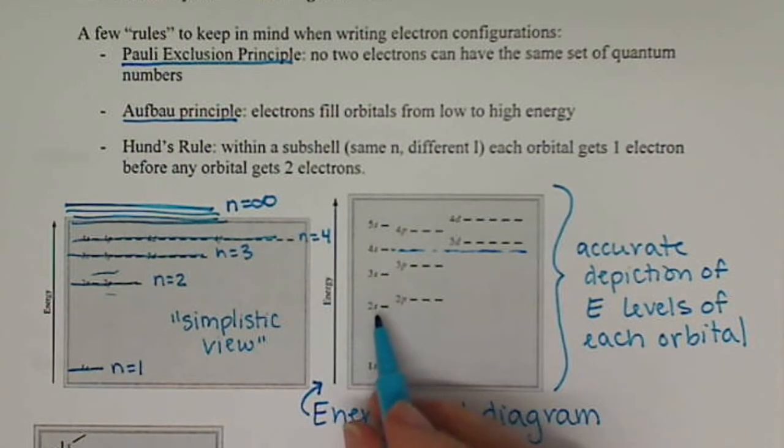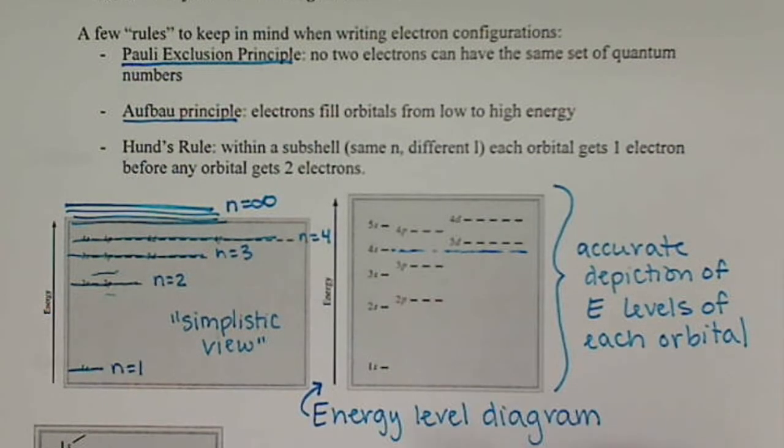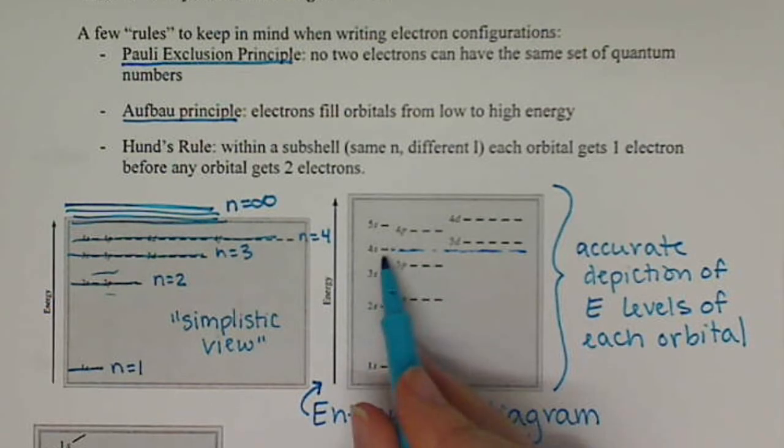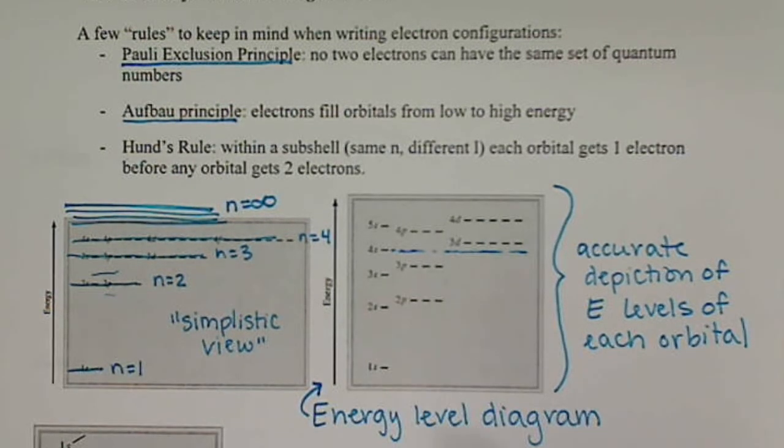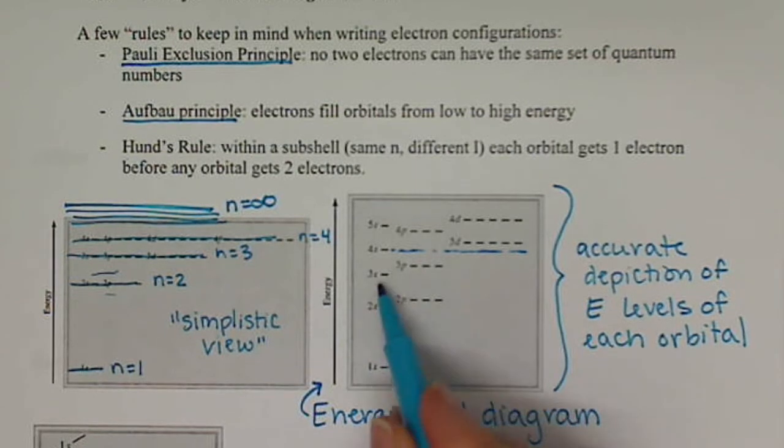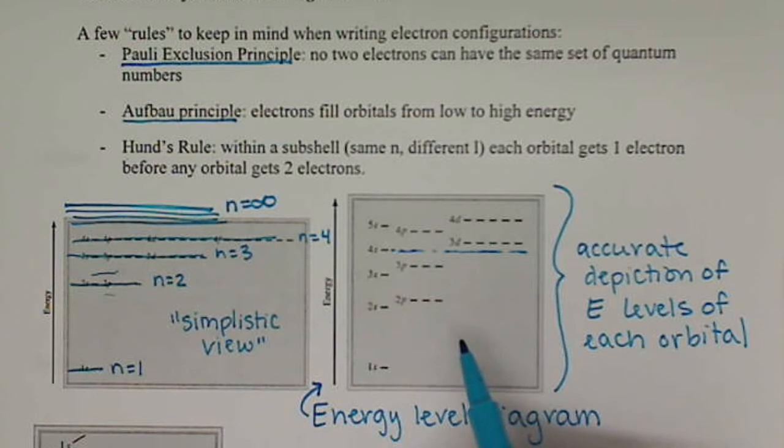Each line represents one orientation of the orbital. So s orbitals can only have one orientation, so they each get one line. p orbitals have three orientations, px, py, and pz. So we have three lines representing each of those three orientations.